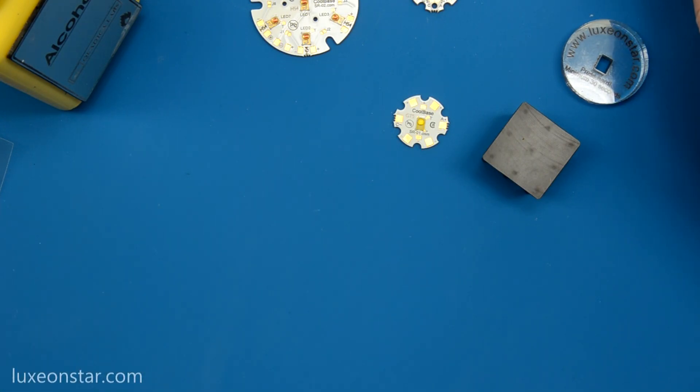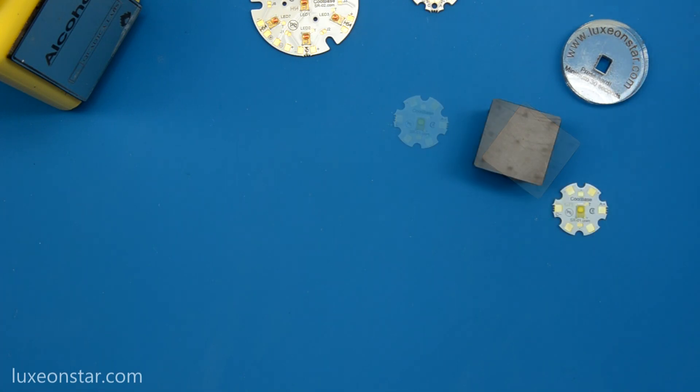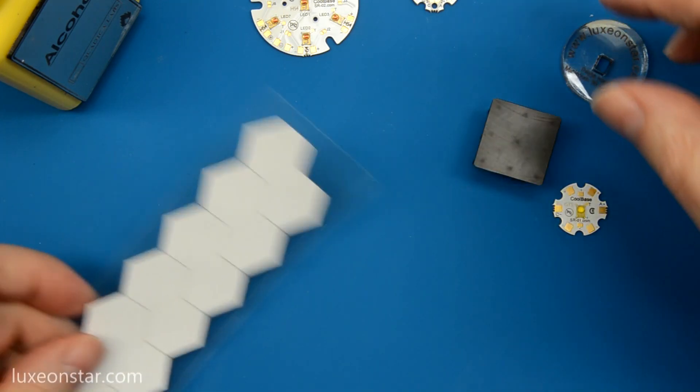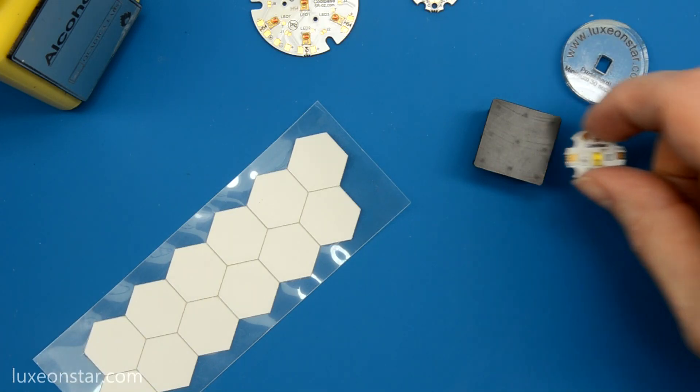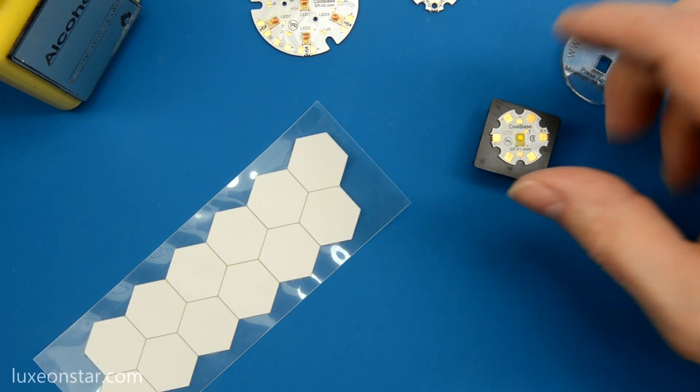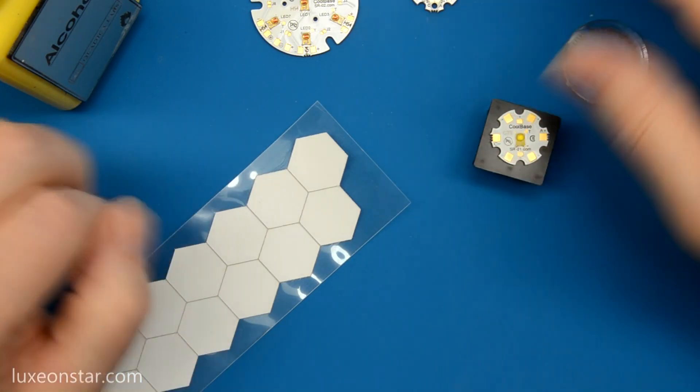We also have tape for the less popular assembly configurations as well. Here I'm going to demonstrate how to use double-sided thermal tape to fasten a 20 millimeter star LED to a heat sink. However, the exact same process is used for all the LEDs that we offer.